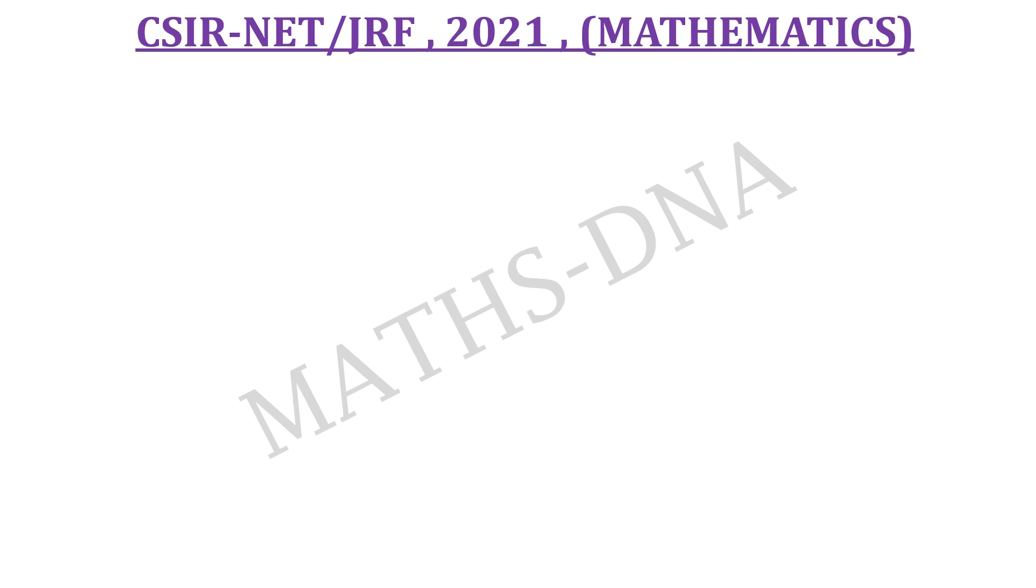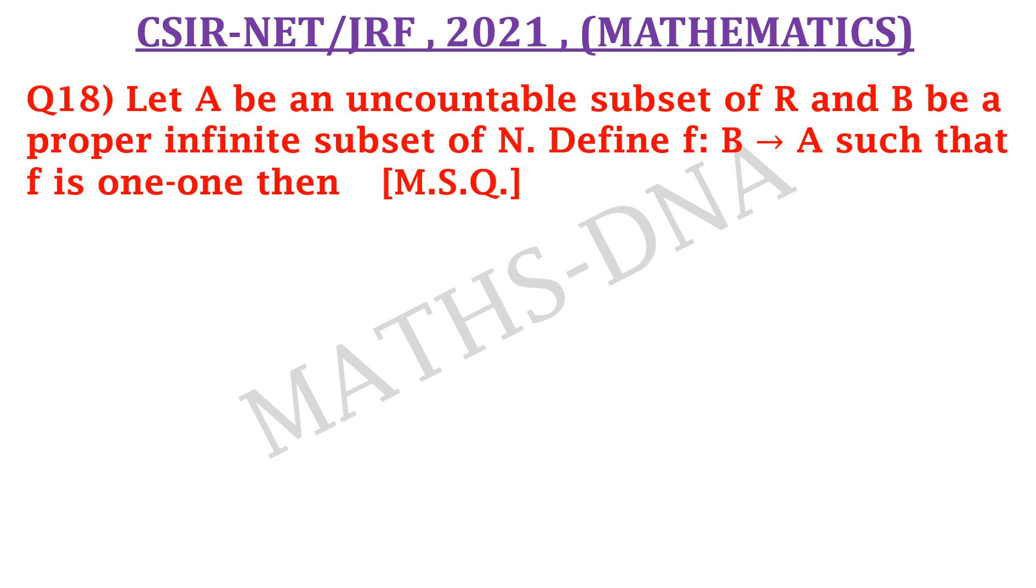Now moving on to the question. The question is: let A be an uncountable subset of R, that is the set of real numbers, and B be a proper infinite subset of N, where N is the set of natural numbers.